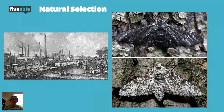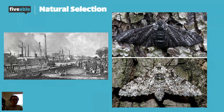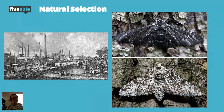The lighter moths stuck out to predators and were eaten, whereas the darker moths survived because they could blend in. They weren't getting eaten by predators and therefore reproduced more. This is an example of directional selection because we're pushing towards one extreme phenotype — the darker phenotype — and away from the lighter phenotype, just due to environmental change.